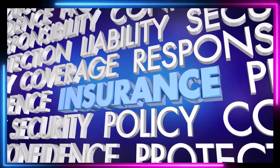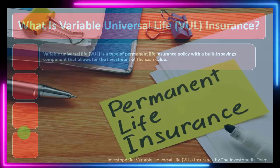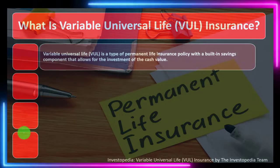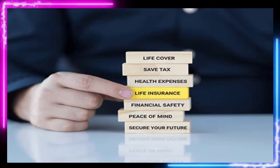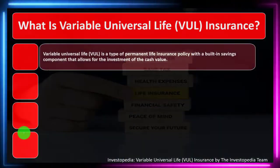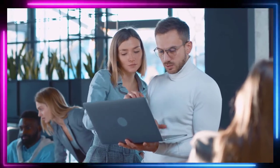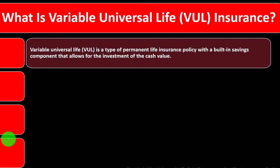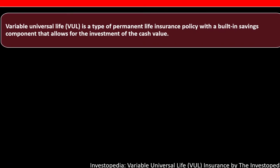We looked at the two major categories of insurance to keep in mind: pure insurance (term insurance) and permanent insurance. Within the category of permanent insurance, we have universal life and variable universal life insurance. You always want to compare and contrast these to the pure insurance — the term insurance. So what is Variable Universal Life (VUL) insurance?